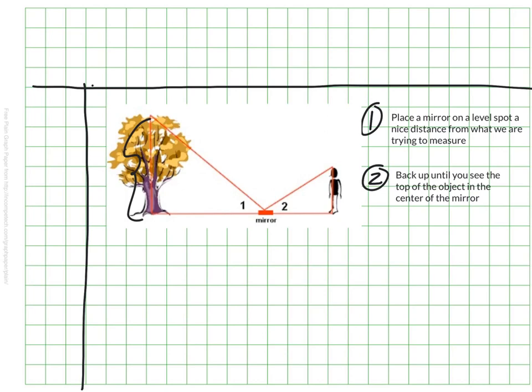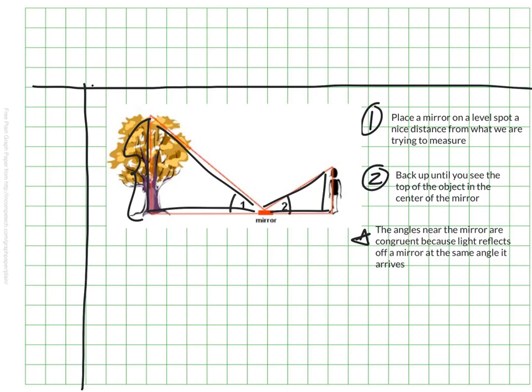Now, this makes two triangles. You can see a triangle here, and you can see a triangle here. And these triangles are similar. The angles here near the mirror are congruent. And we know inherently that these are congruent because when light hits the mirror, it reflects off the mirror at the same angle. So these two are just inherently congruent, and that's one way that we prove that these are similar triangles.